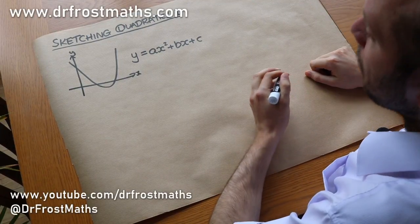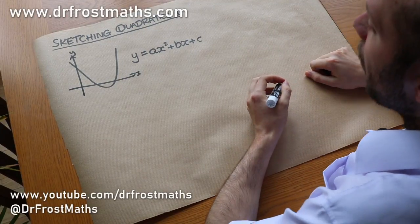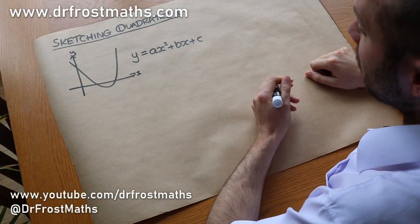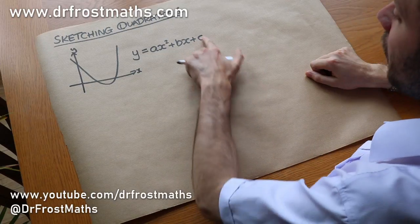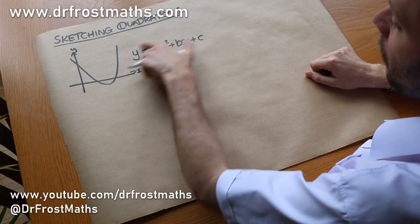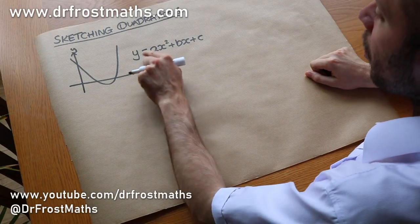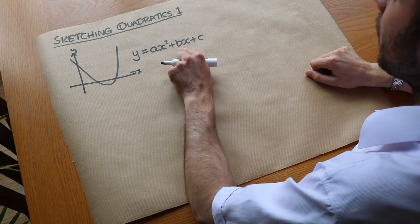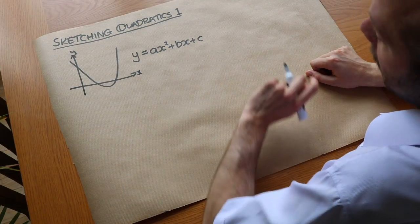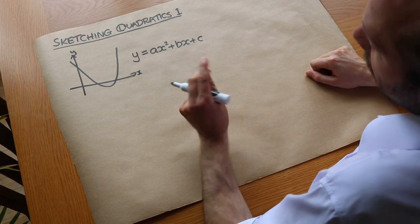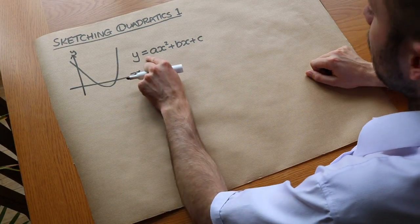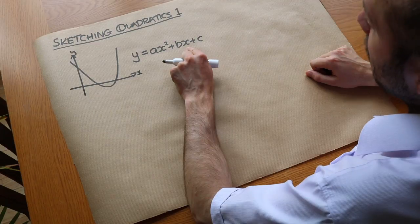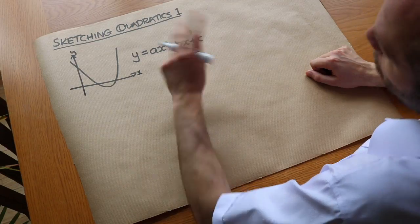In this video we're going to be looking in more detail about how we can sketch quadratic equations. Here's the general form of a quadratic equation: y equals something x squared plus something x plus something. So that could be, for example, y equals 3x squared plus 2x minus 1.